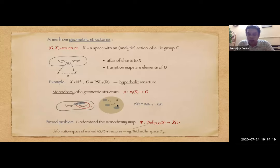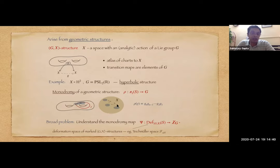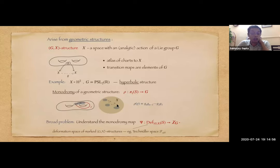I will tell you how complex projective structures relate to the Schwarzian equation — a certain differential equation on the Riemann surface — and what is known about the monodromy map in this case. I'll include a recent result and discuss some specific open problems.